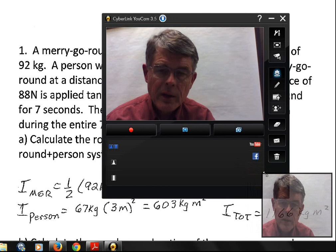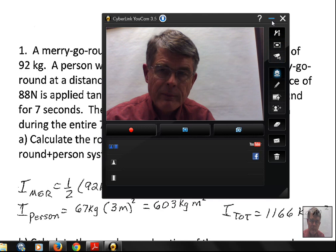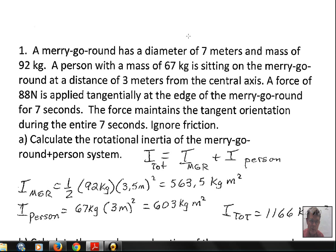This video will deal with rotational inertia and angular momentum for the case of a merry-go-round. We have characteristics given in the problem: the disc has a diameter of 7 meters and mass of 92 kilograms. Merry-go-rounds are short cylinders, so we can look that up in the table for calculating its rotational inertia.